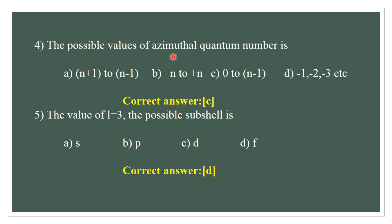The possible values of the azimuthal quantum number: A) N+1 to N-1, B) -N to +N, C) 0 to N-1. Option C is correct. The principal quantum number is N, and the possible azimuthal quantum number ranges from 0 to N-1. The correct answer is C.